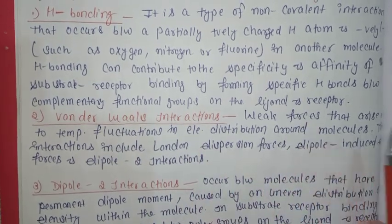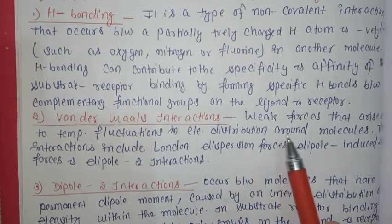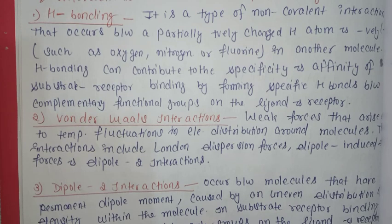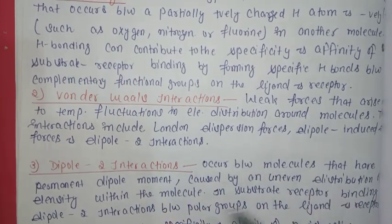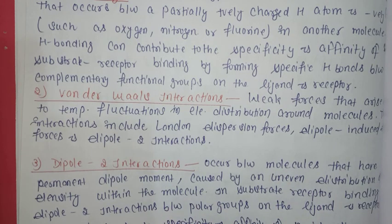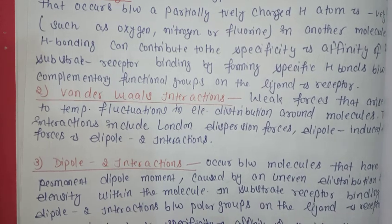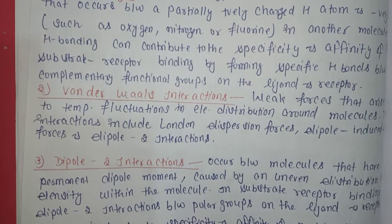Van der Waals interactions are the weak forces that arise due to temporary fluctuations in electron distribution around a molecule. These interactions include London dispersion forces, dispersion forces, and dipole-induced dipole interactions. Dipole-dipole interactions occur between molecules that have a permanent dipole moment, caused by an uneven distribution of electron density within the molecule. In substrate-receptor binding, dipole-dipole interactions between polar groups on the ligand and receptor can contribute to the specificity and affinity of the interactions.